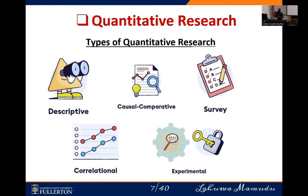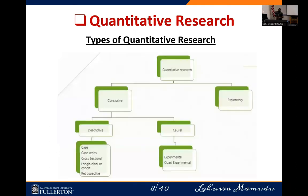We also have experimental research. When we talk about experimental research, investigators have absolute control over the subjects participating in the research. An example of experimental research is the clinical trial — every clinical trial is an example of experimental research. Now let us look at the broad scope of types of quantitative research: we have the conclusive and the exploratory.